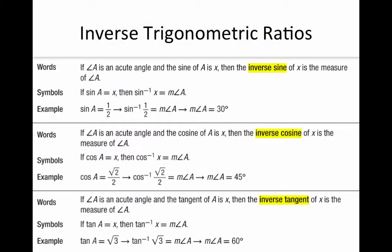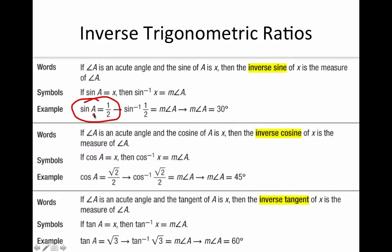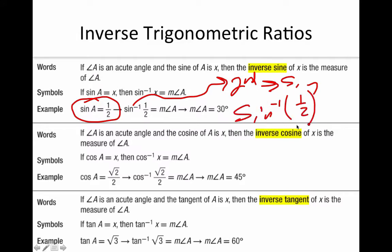When you are looking for an angle — for example, if sine of A = 1/2 and you want the angle — use inverse sine on your calculator. Press SECOND and then SIN to get sin⁻¹. You're asking the calculator: what angle has a sine ratio of 1/2? You should get 30°. Make sure you're in degree mode.